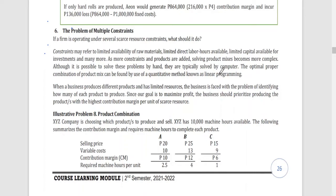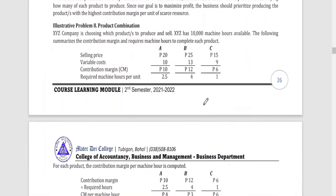The important thing to consider when faced with constraints is the contribution margin per unit of the scarce resource. We should prioritize the production of products that maximize the contribution margin per unit of the given scarce resource. Here is another example for the maximization of contribution margin per unit of scarce resource.